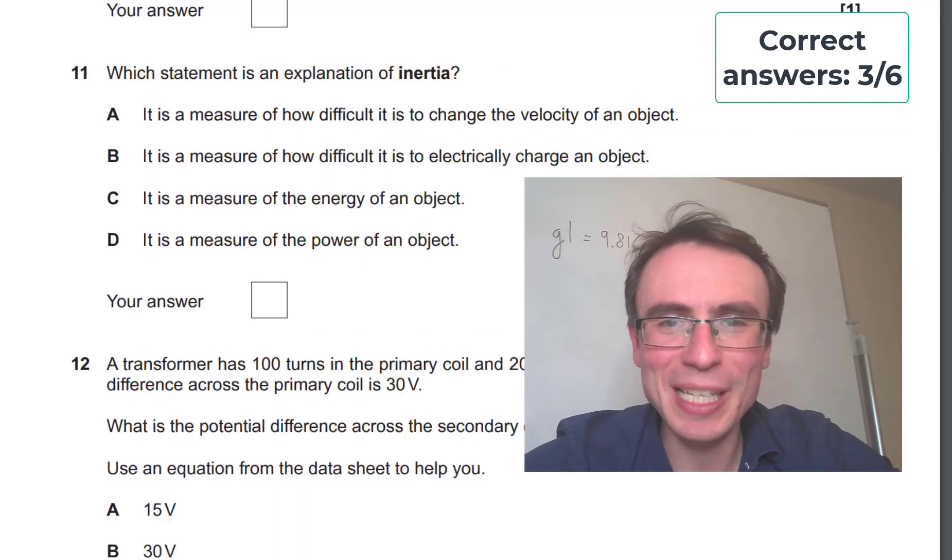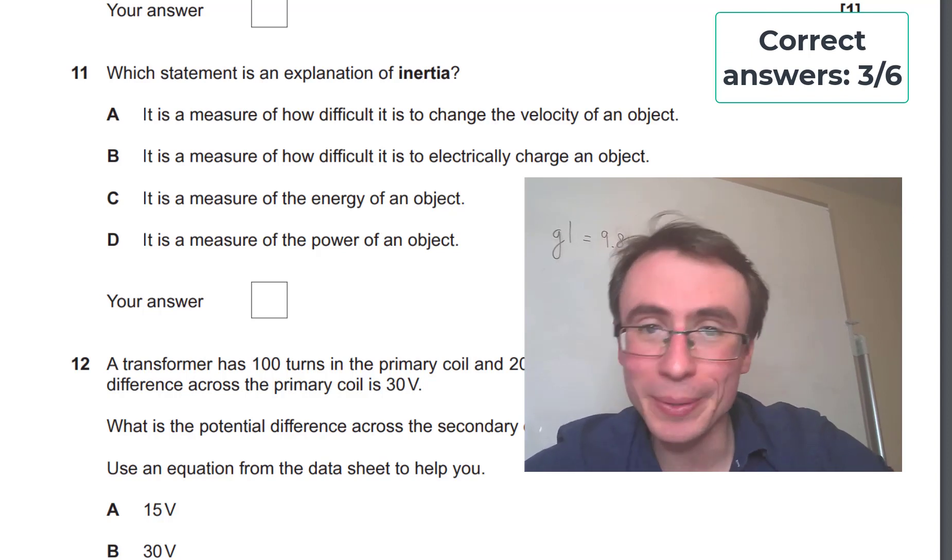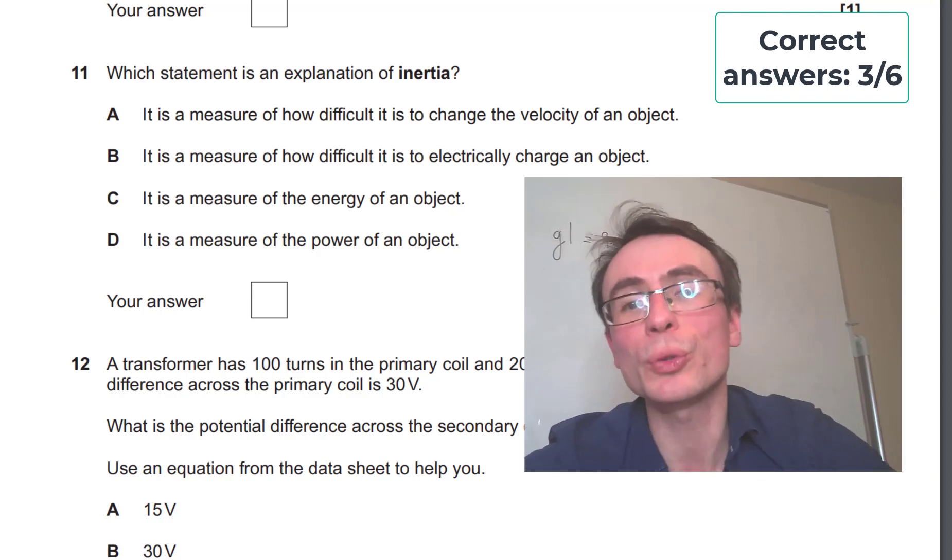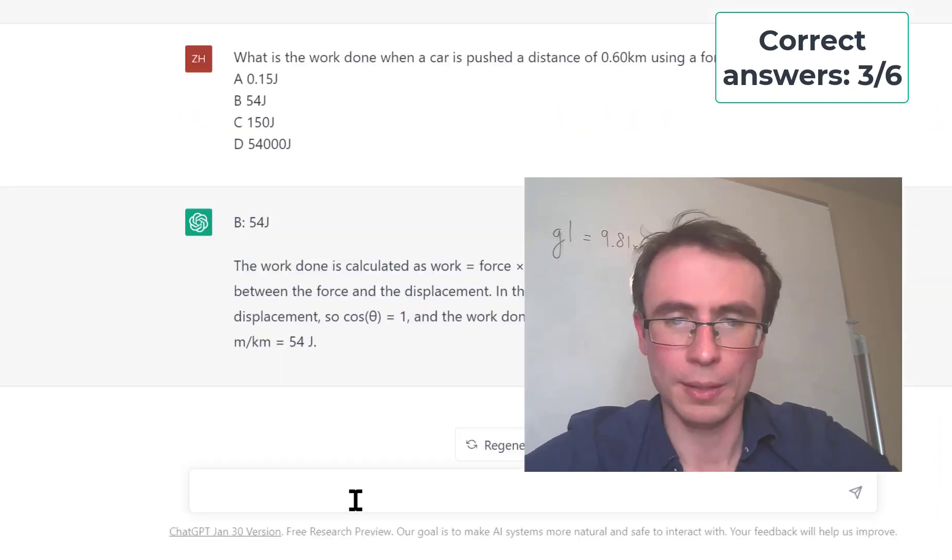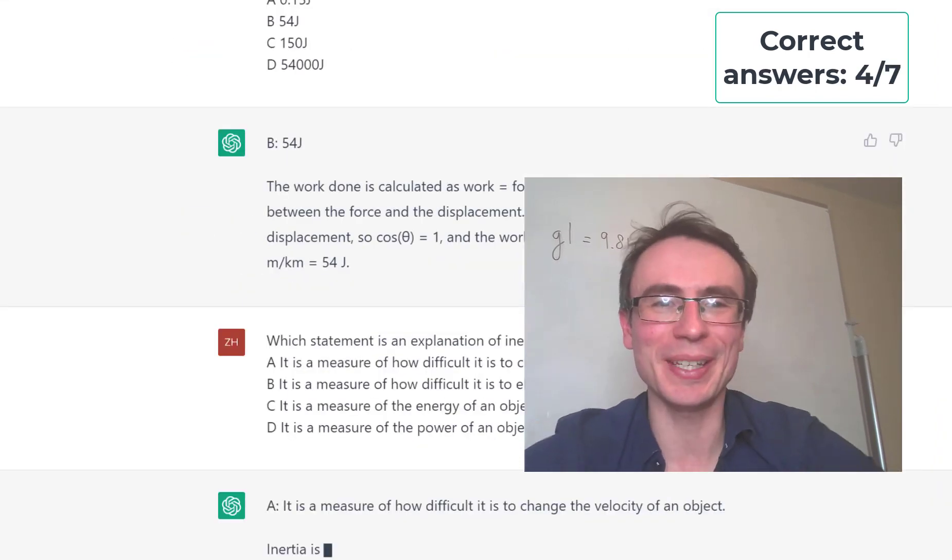Next one, which statement is an explanation of inertia? Now it's actually a measure of how difficult it is to accelerate an object or to change its velocity. So the correct answer is A. Let's see how it does. It's gotten this one correct.